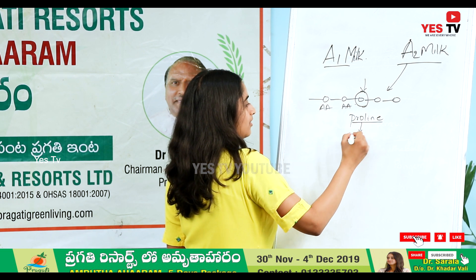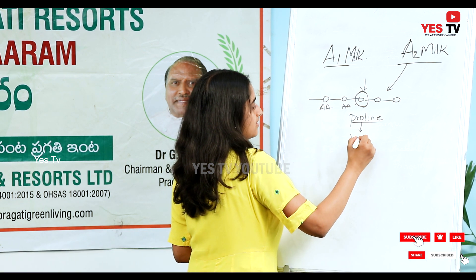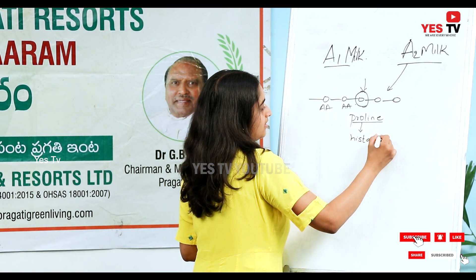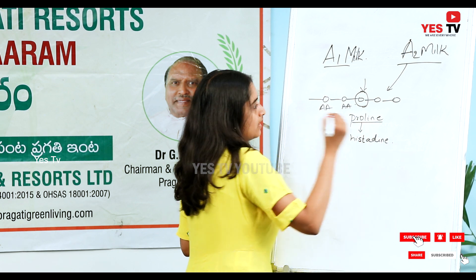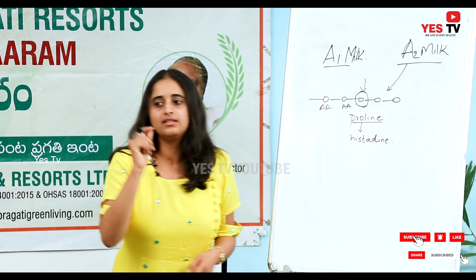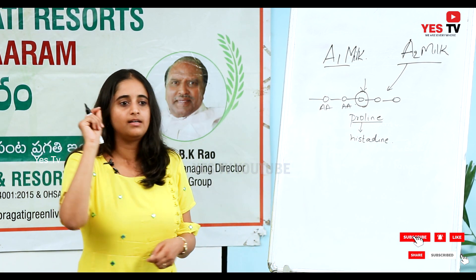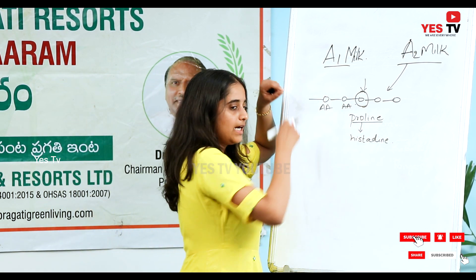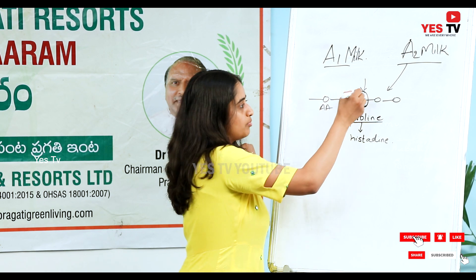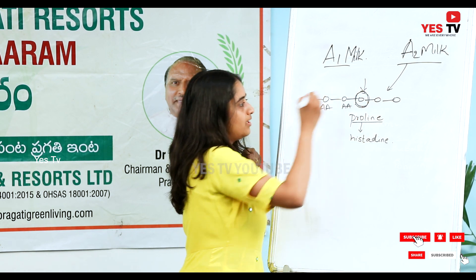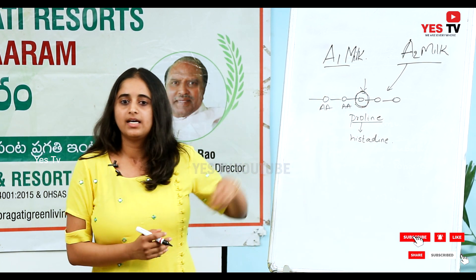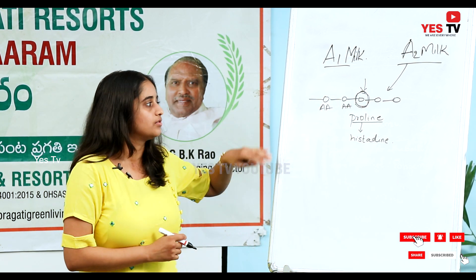Instead of proline, in A1 milk it has changed to histidine. Just this one difference — one change in the entire chain — has altered everything. But what harm does this cause?